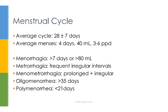PPD is a good acronym to know — it stands for pads per day. If bleeding occurs for more than 7 days or greater than 80 milliliters of loss, this is called menorrhagia. If bleeding is frequent and irregular, then you have metrorrhagia. If you combine the two and it's prolonged and irregular, you get menometrorrhagia. If cycles last greater than 35 days, this is considered oligomenorrhea, and if cycles are shorter than 21 days, this is called polymenorrhea.